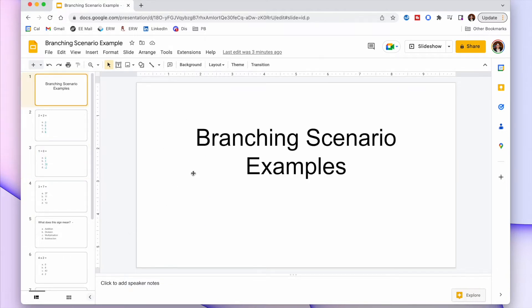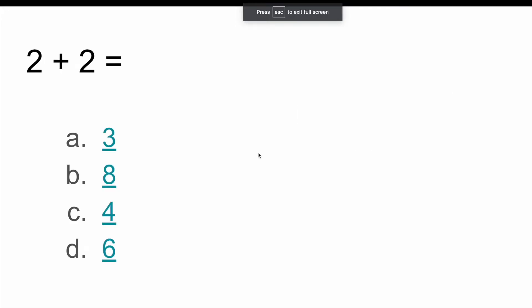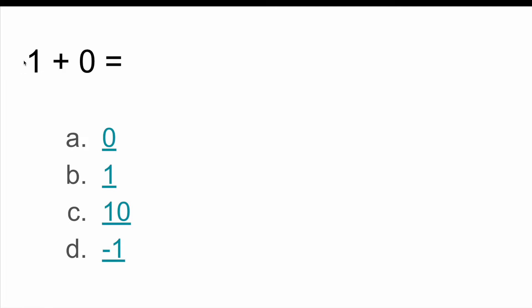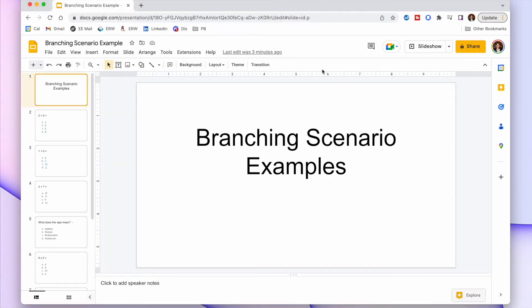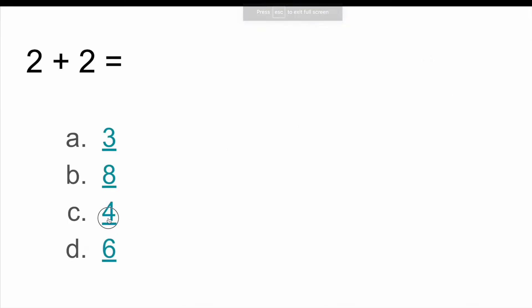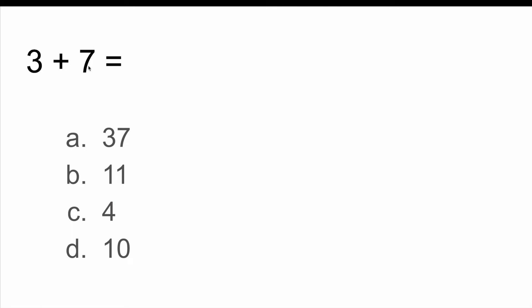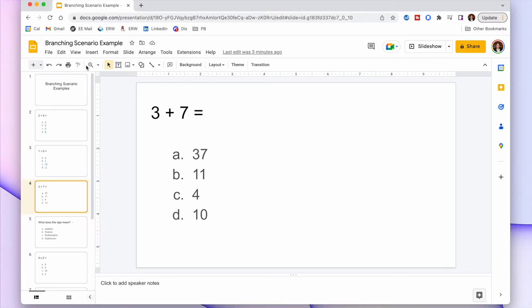Let's go ahead and do the slideshow to see how this works. Two plus two — let's say they don't know, so they guess three. That takes them to one plus zero. Maybe they get that right, they click one, and now they get a harder question. If they go back and get two plus two right — that's four — they go straight to the harder question: three plus seven.